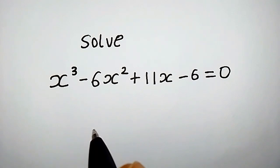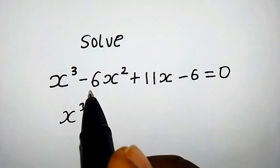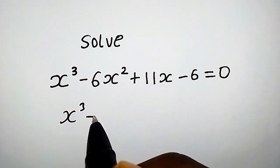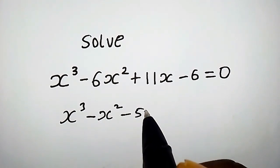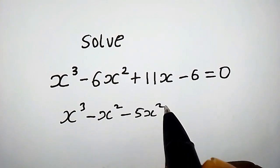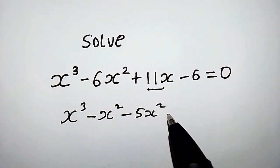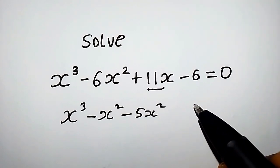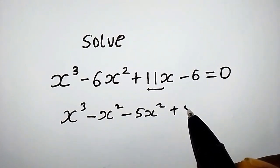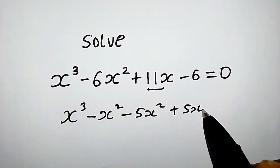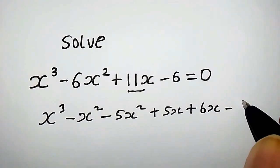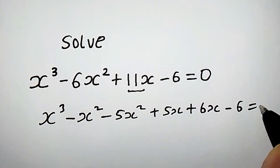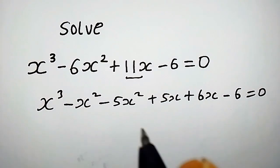How do we solve this cubic equation? We have x cubed minus 6x squared plus 11x minus 6 equals 0. We can rewrite 11x as 5x plus 6x.